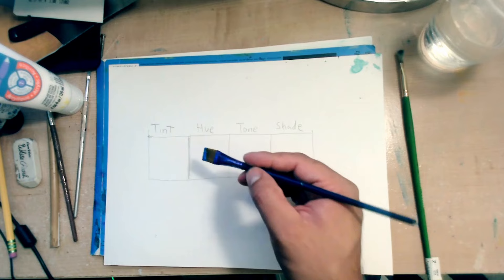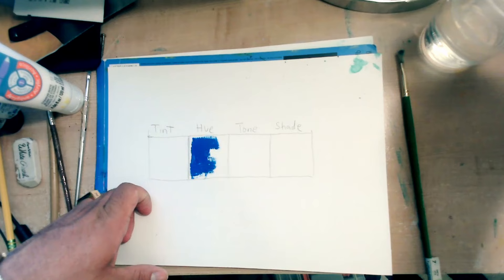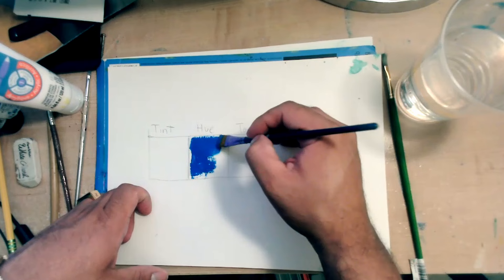So we're going to put it here in hue. If you put it on the first one, that's okay. But I'm putting it in the second one so you can see the difference between light and dark. And then you can add a little bit of water so it flows smoothly.